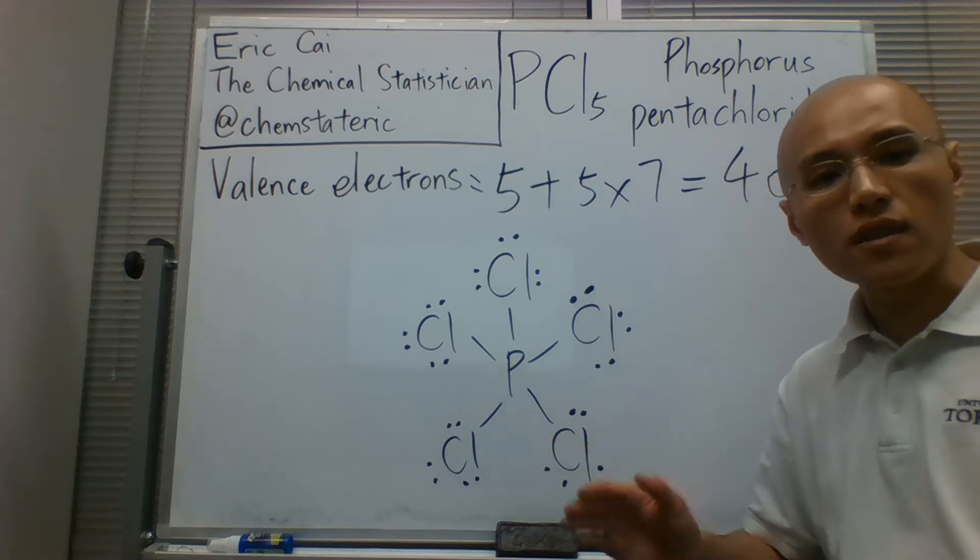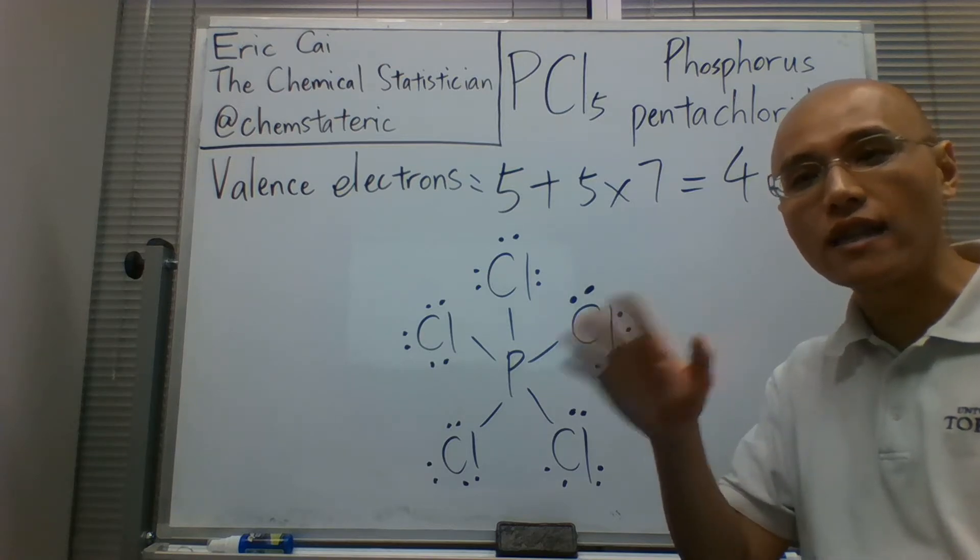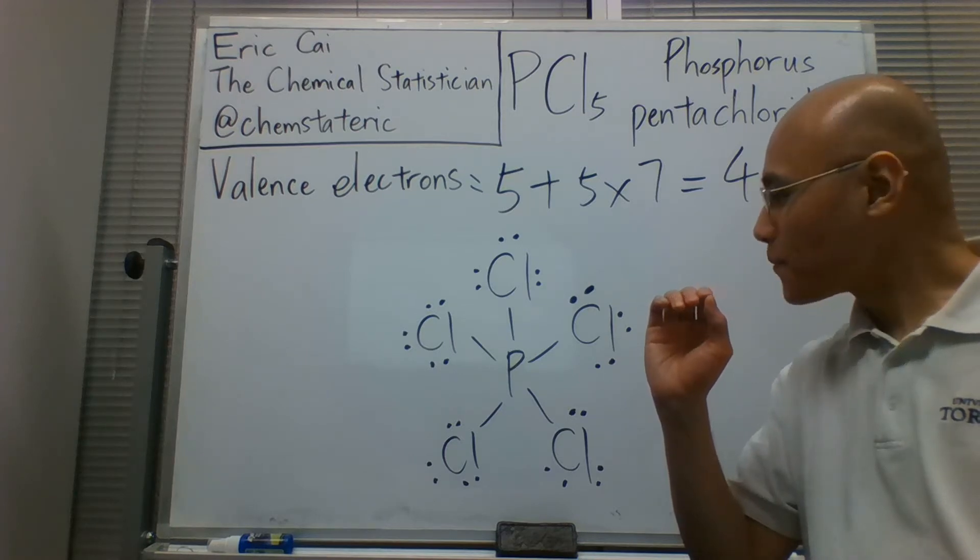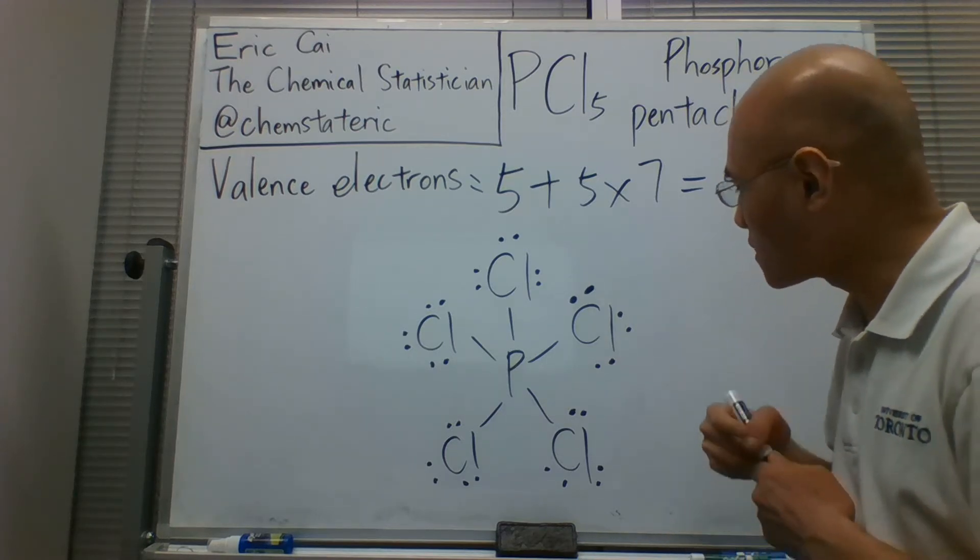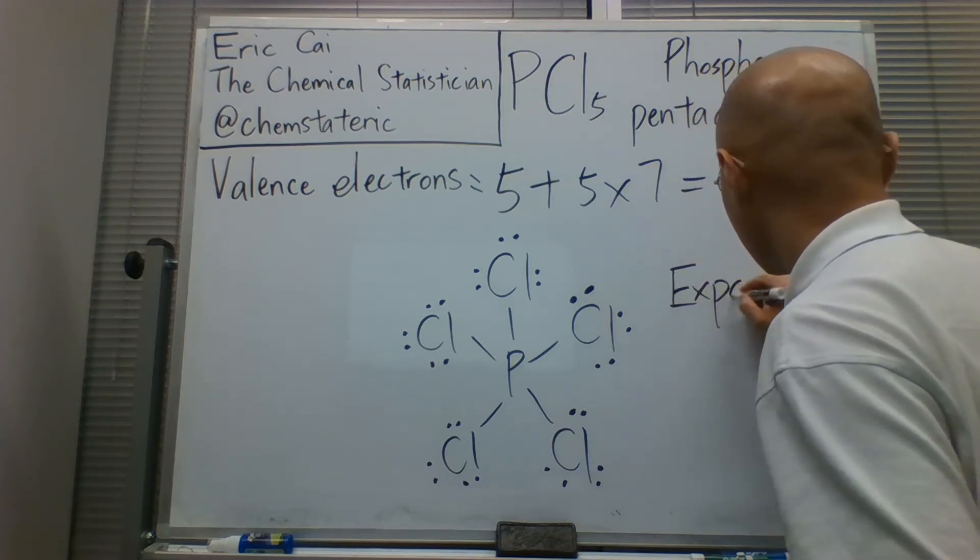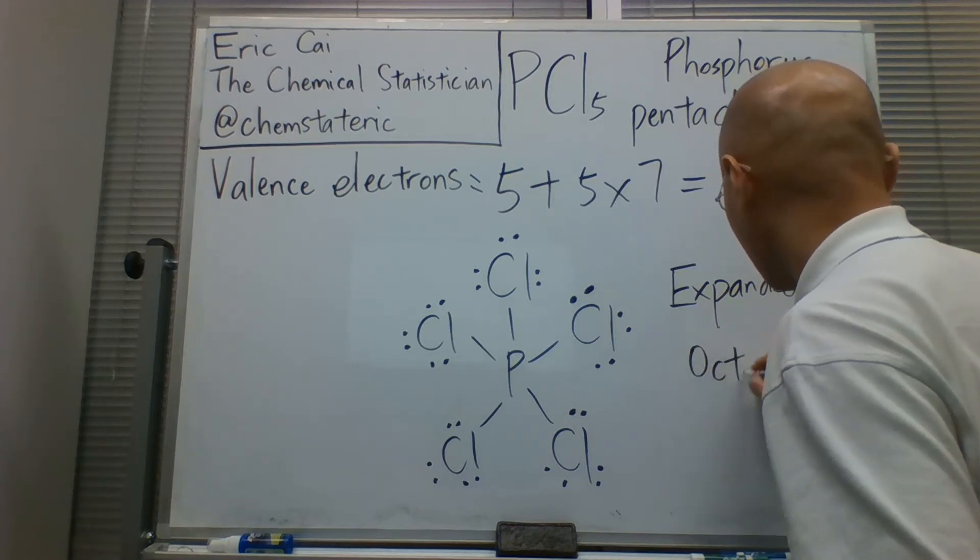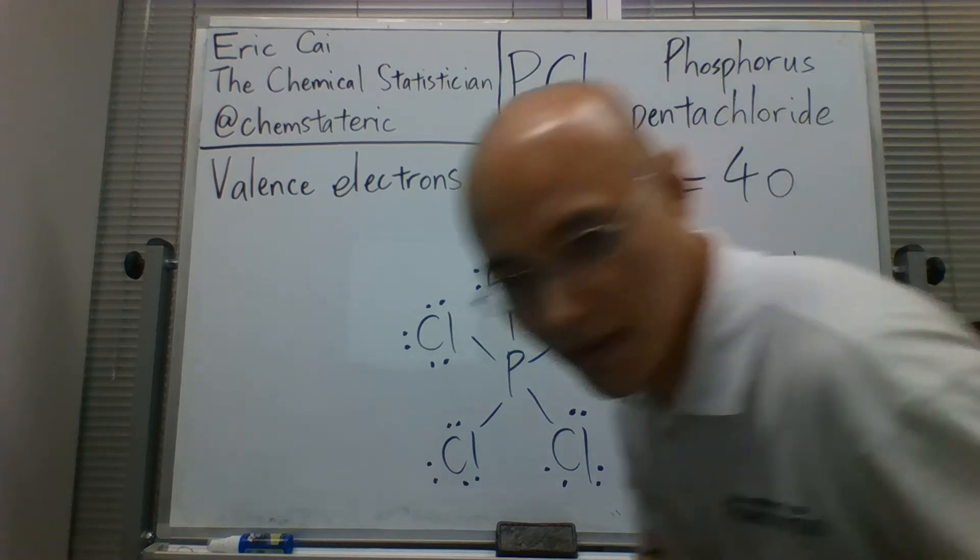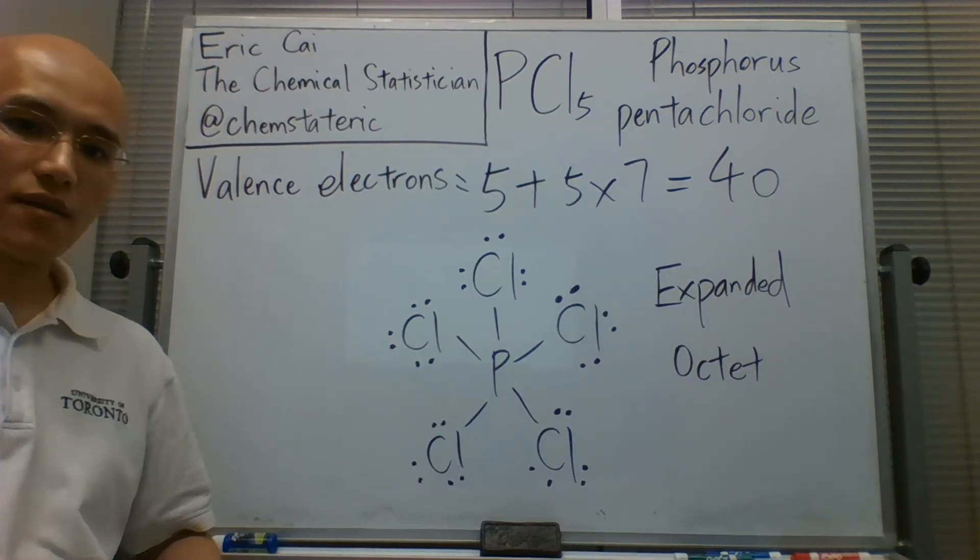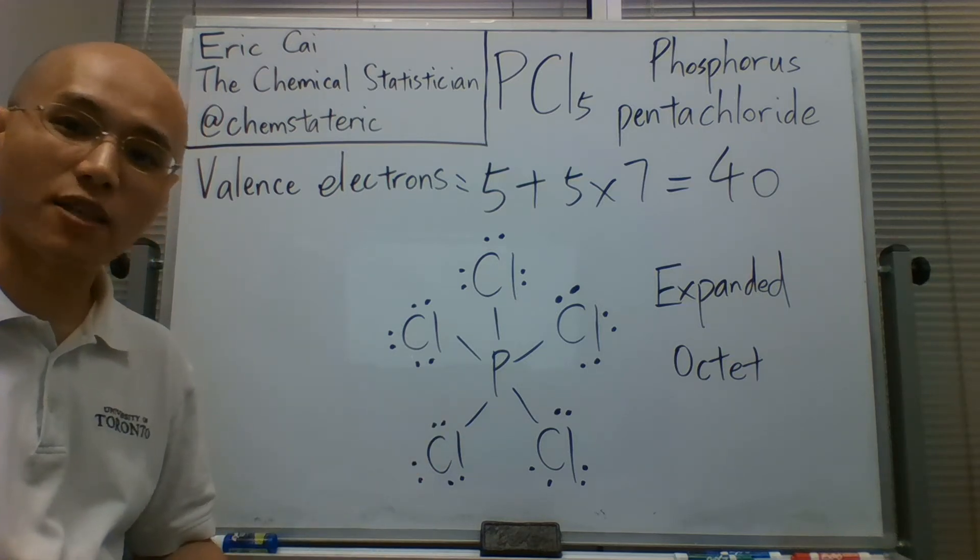Phosphorus is in the third period, so it has d orbitals. Okay, so this is a phenomenon known as the expanded octet. And that is the Lewis structure for phosphorus pentachloride.